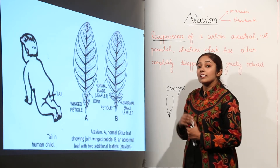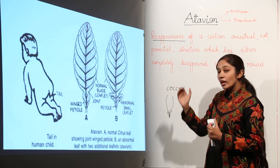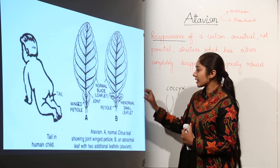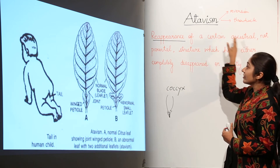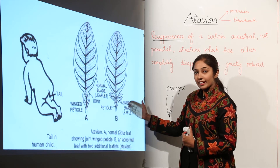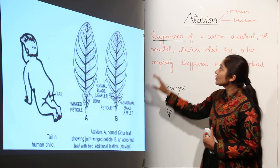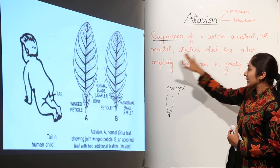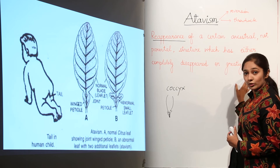Why is this atavism? Because it is thought that the citrus leaf was originally trifoliate. But due to evolution over time, it has become its current form. Due to the reappearance of ancestral characters, some citrus leaves have this structure. That is why this abnormal small leaflet gives evidence of atavism — the reappearance of a certain ancestral, not parental, structure which has either completely disappeared or greatly reduced.